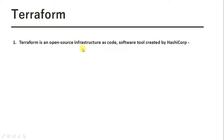That's where infrastructure as code comes into place. Infrastructure as code means that you define all the resources you need in a piece of code or a configuration file, and you just run that file to create your infrastructure. Terraform is a tool which enables you to define your infrastructure in code and run that code to create the resources in your cloud platform.